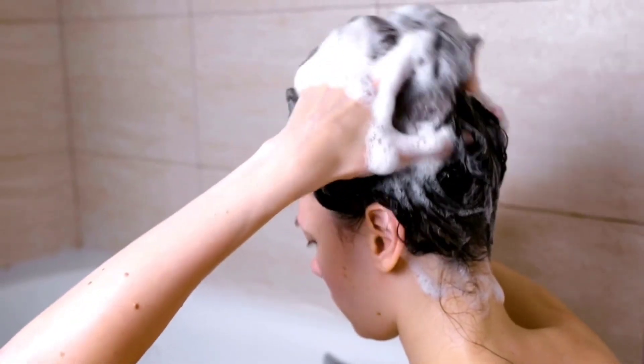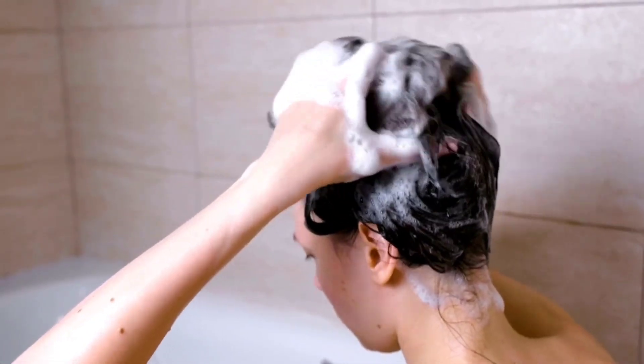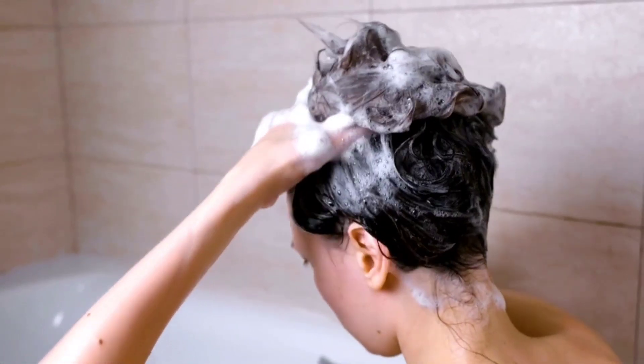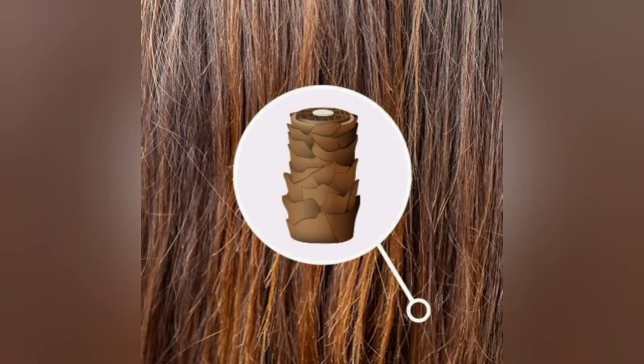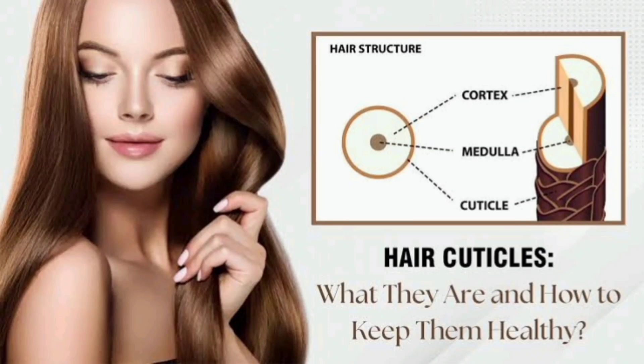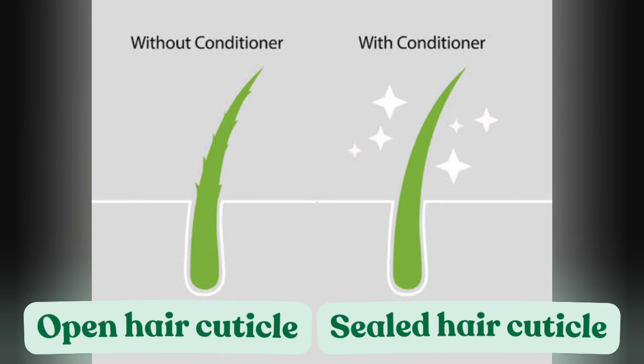If you use the conditioners, almost all hair experts recommend it. I am going to apply the shampoo — it is going to open the cuticle. I am going to use the cuticle to clean the shampoo. If I use the conditioners, they close the cuticle and lock the cuticle.